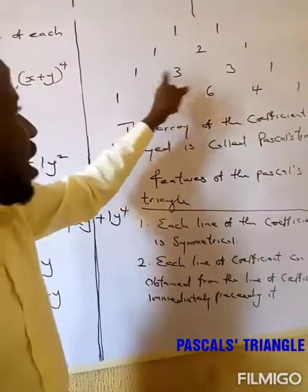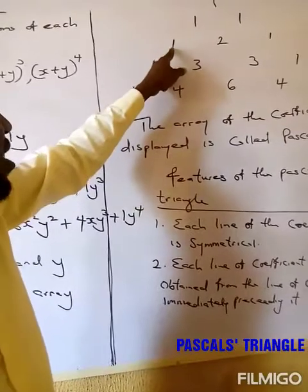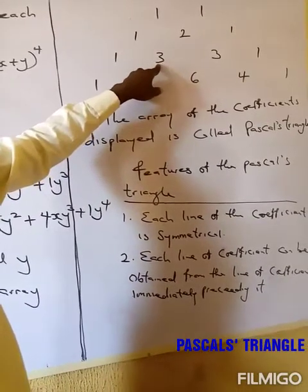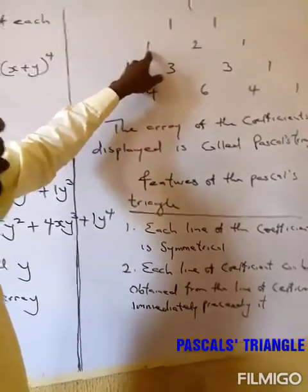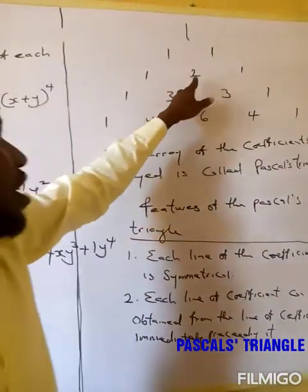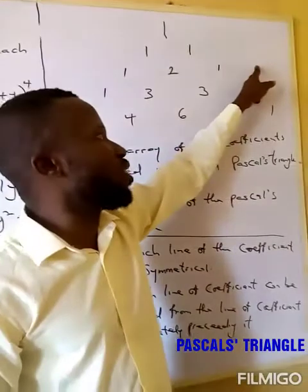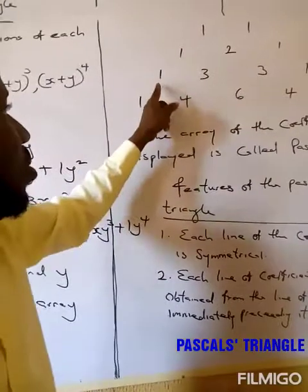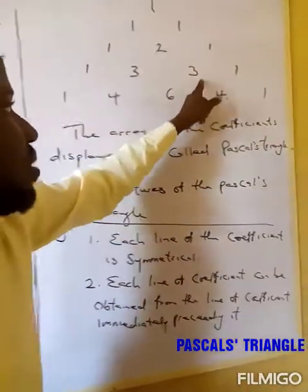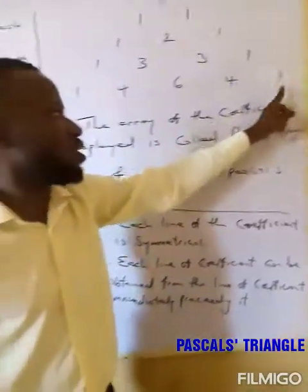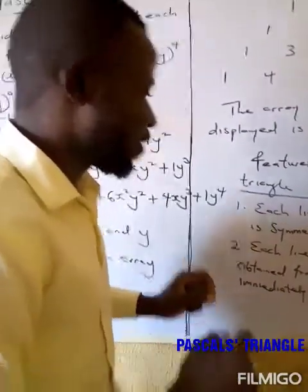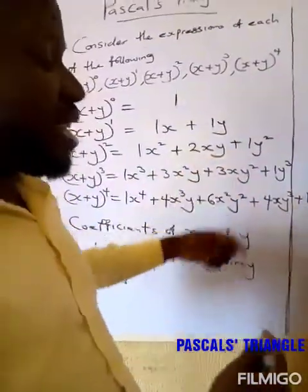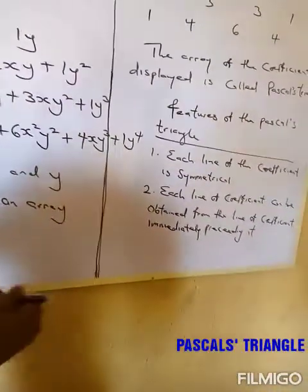Similarly, to get the coefficient of (s+y)^4 from the preceding row 1, 3, 3, 1: start with 1; then 1 plus 3 gives 4; then 3 plus 3 gives 6; then 3 plus 1 gives 4; and since there is no other number, it ends with 1. Therefore, each line of coefficients can be obtained from the line immediately preceding it.